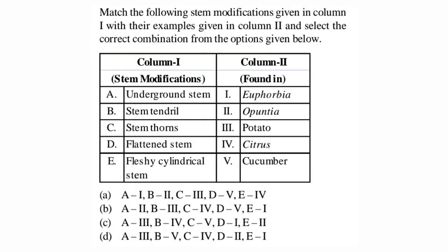Next is a match-the-following question: match stem modifications in column one with their examples in column two. Underground stem is seen in potato. Stem tendril is seen in cucumber. Stem thorns are seen in citrus plants like lime. Flattened stem — phylloclade — is seen in Opuntia, which stores water. Fleshy cylindrical stem is seen in Euphorbia. So option D is correct for this question.